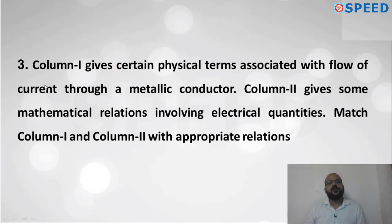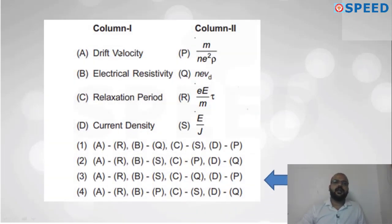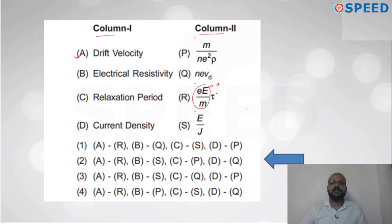Question three involves matching column one — physical terms associated with flow of current through a metallic conductor — with column two containing mathematical relations. Drift velocity can be written as eEτ/m, where eE/m is acceleration and τ is relaxation time. So A matches with R. For electrical resistivity, using Ohm's law at microscopic level: E = ρJ, so ρ = E/J. Option B matches with S.